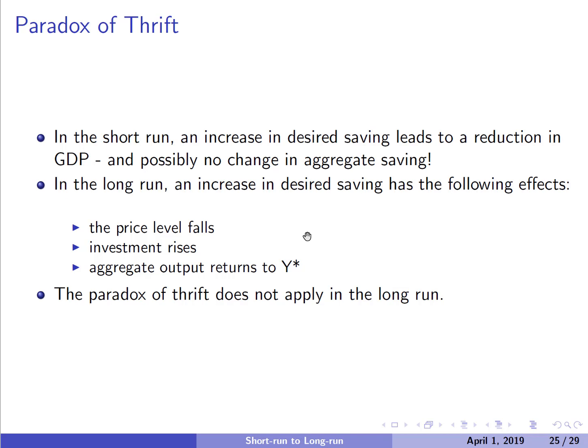This model contains a paradox — the paradox of thrift. In the short run, increasing savings leads to a reduction in GDP because consumption falls, and if we're saving a proportion of GDP, aggregate saving may not actually change. In the long run, however, there's no paradox: increased desired savings leads to a decrease in the price level, an increase in investment, and over time this is what drives actual output and Y-star to increase.